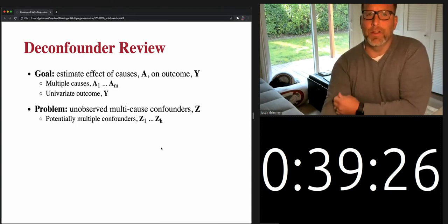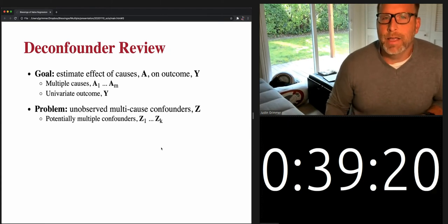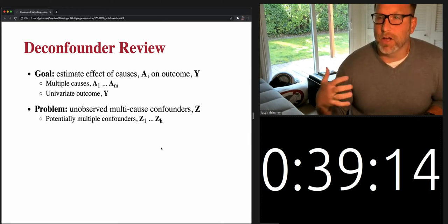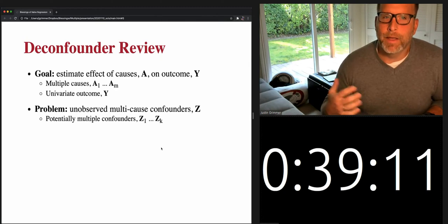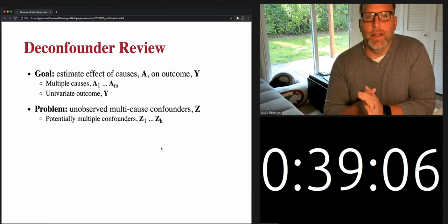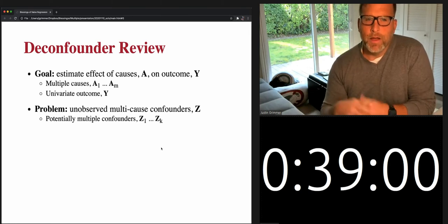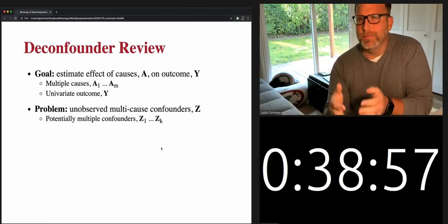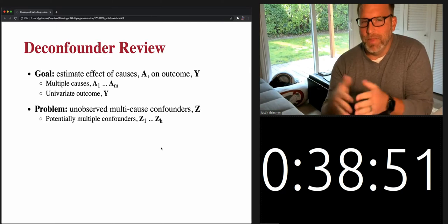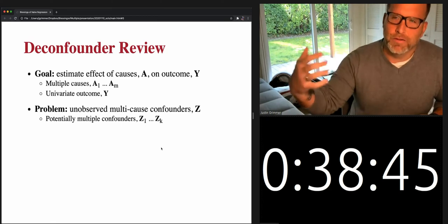The question motivating this talk, and indeed a lot of work across a number of fields, is whether we can learn something about this underlying confounder Z because we have multiple treatments. That's the goal of the D-confounder, which is the term given to this suite of methods by an influential paper from Wang and Blei published in 2019. The goal of the D-confounder is to estimate the effect of a set of causes A on some outcome Y. The key is that there are multiple causes — perhaps a large set — and one univariate outcome.